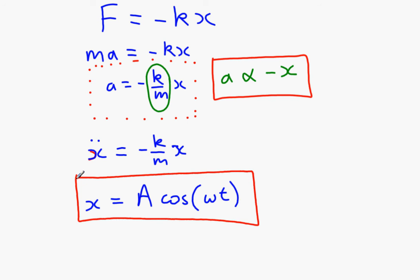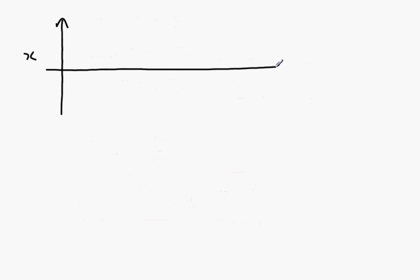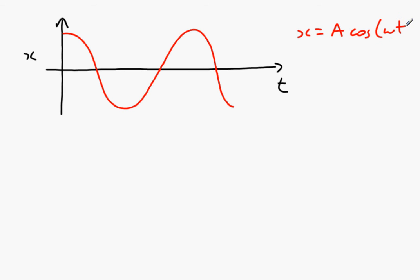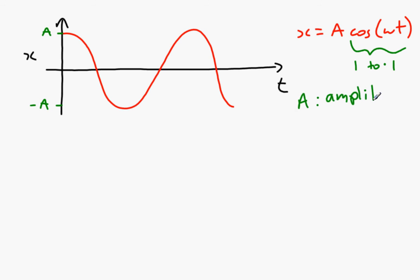What does the graph look like? Our displacement x is changing over time. Here we have displacement x on the vertical axis and time t on the horizontal axis. It's a cosine so it's going to look something like this, where x equals A cos(ωt). Cosine of anything varies between one and minus one, so if we multiply by A it's going to vary from A to minus A. So A is the amplitude, or alternatively the maximum displacement.